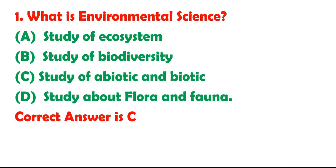Question 1: What is environmental science? A. Study of ecosystem. B. Study of biodiversity. C. Study of abiotic and biotic. D. Study about flora and fauna. Correct answer is C.